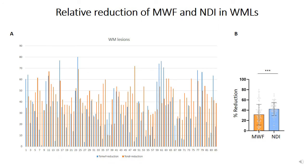Then, we decided to investigate myelin water fraction dominantly damaged white matter versus NDI dominantly damaged white matter. As you see in the left panel, white matter lesions showed a variable reduction in myelin water fraction and NDI compared with the contralateral mirror region of interest in normal appearing white matter, and the reduction in NDI was higher than the reduction in myelin water fraction — in almost 74% of white matter lesions, the reduction in NDI was higher. As you see in the right panel, on average, the reduction in NDI was higher than the reduction in myelin water fraction in MS lesions compared to the contralateral mirror region of interest.